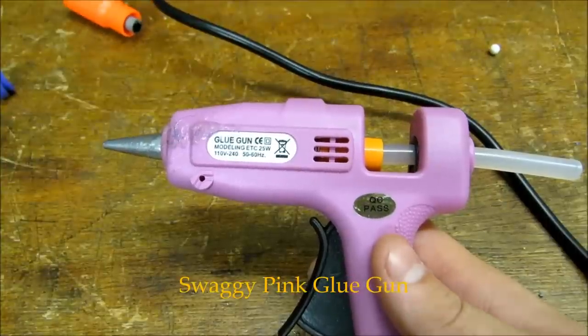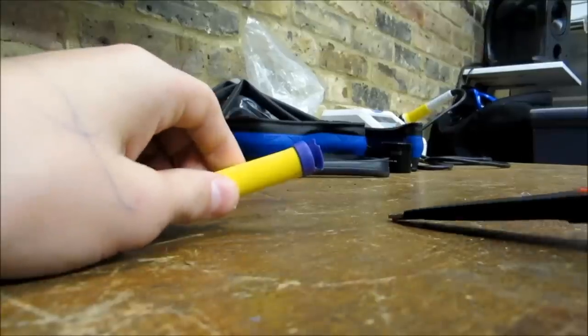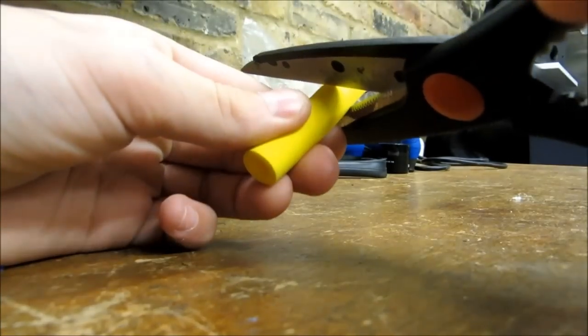Now is a good time to get your glue gun warmed up. You now want to get your scissors and cut off the tip of the dart like so.